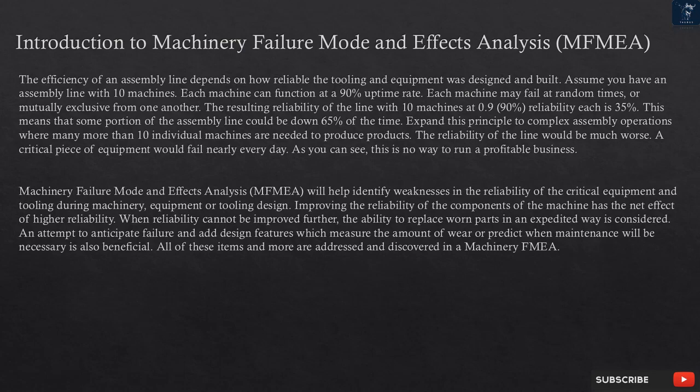Introduction to Machinery Failure Mode and Effects Analysis (MFMEA). The efficiency of an assembly line depends on how reliable the tooling and equipment was designed and built. Assume you have an assembly line with 10 machines; each machine can function at a 90% uptime rate. Each machine may fail at random times, mutually exclusive from one another. The resulting reliability of the line with 10 machines at 90% reliability each is 35%.